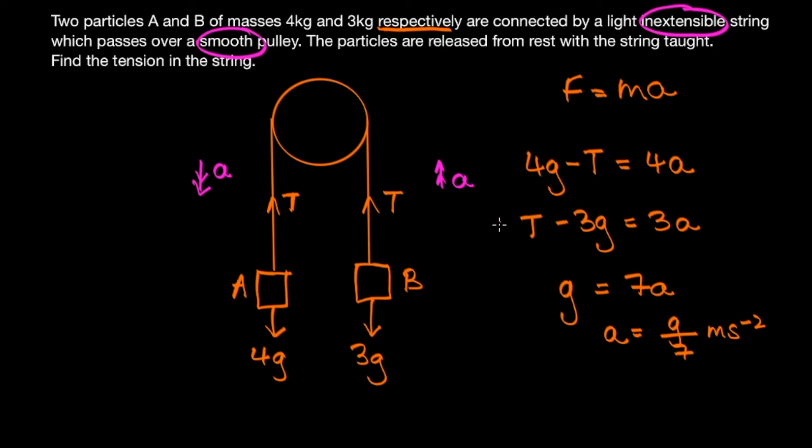So using the second equation, T equals 3g plus 3a, so T equals 3g plus 3g over 7, which I believe is 24 over 7g, and the unit of tension is the newton.